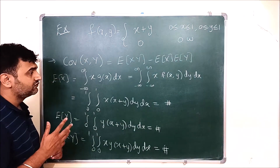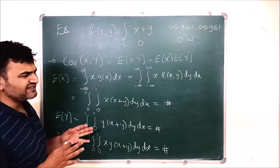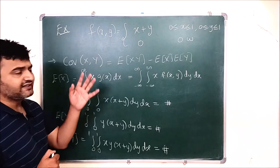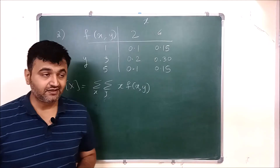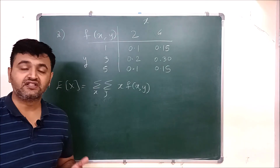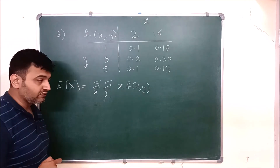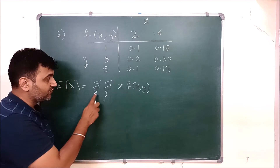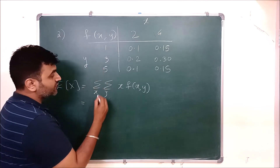Now let us take one example on the discrete variable case. Here a joint PMF is given; your job is to find the covariance between X and Y. First, we will find E[X]. For E[X], we compute the double summation of x·f(x,y) over all x and y. For example, when x = 2: 2·f(2,1) + 2·f(2,3) + 2·f(2,5).